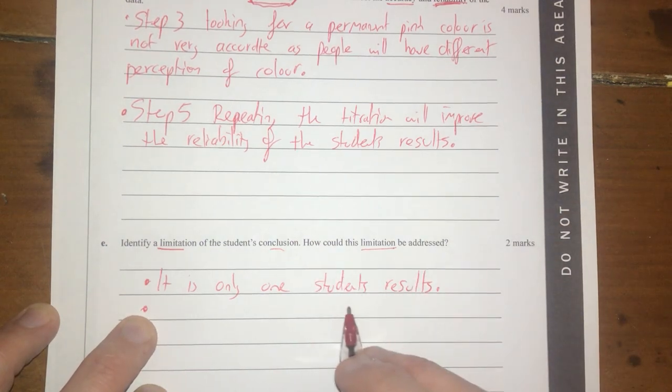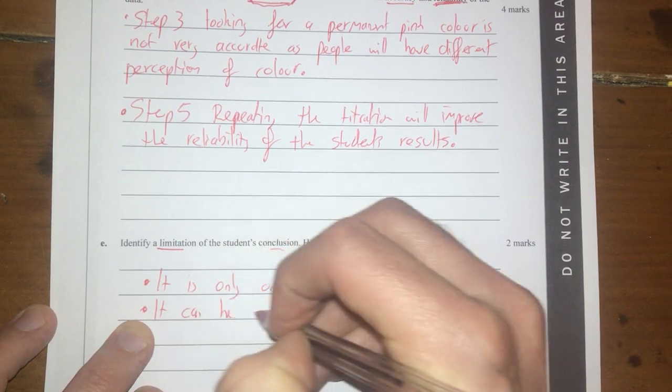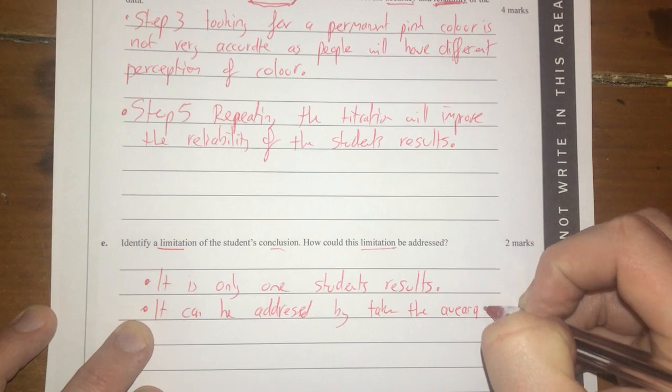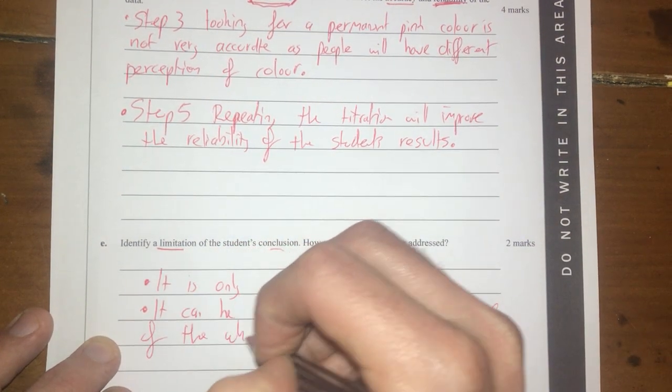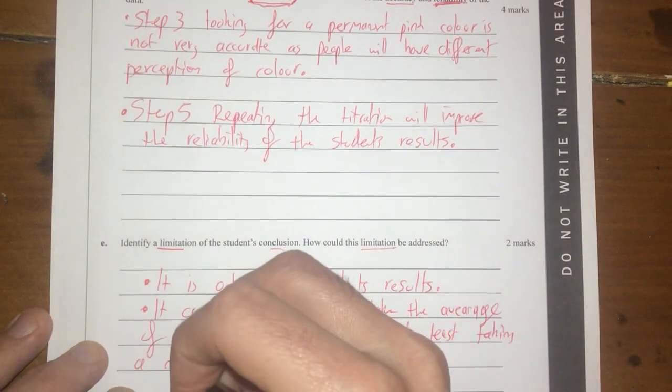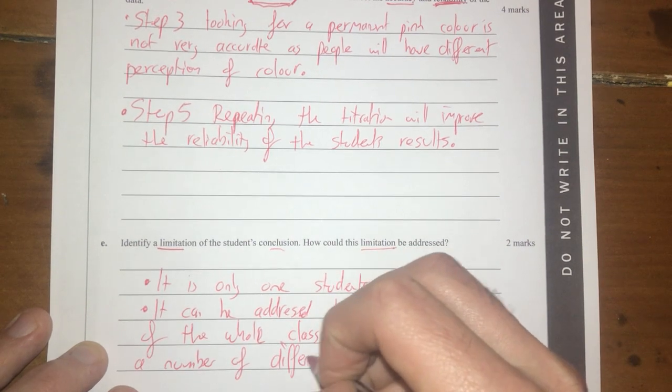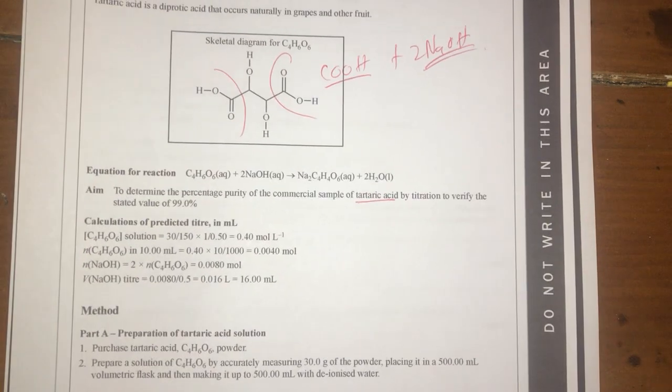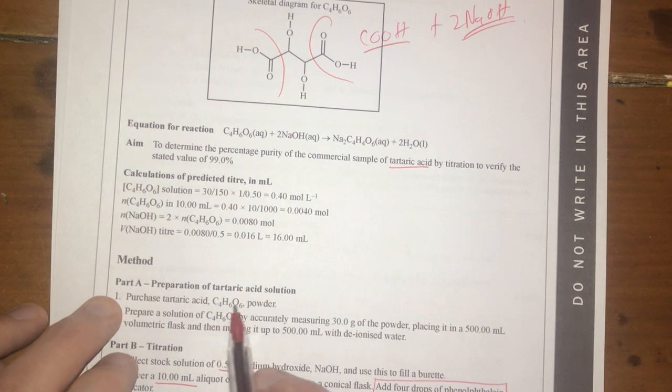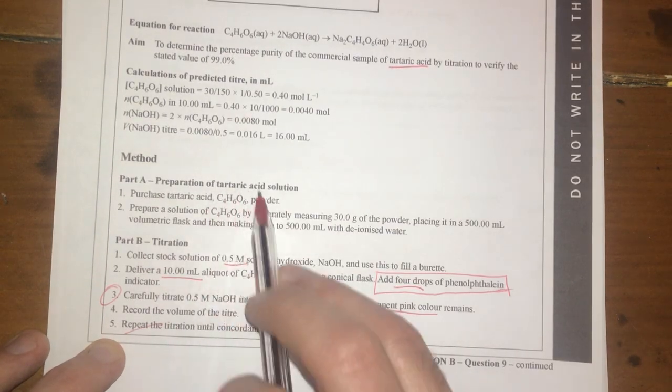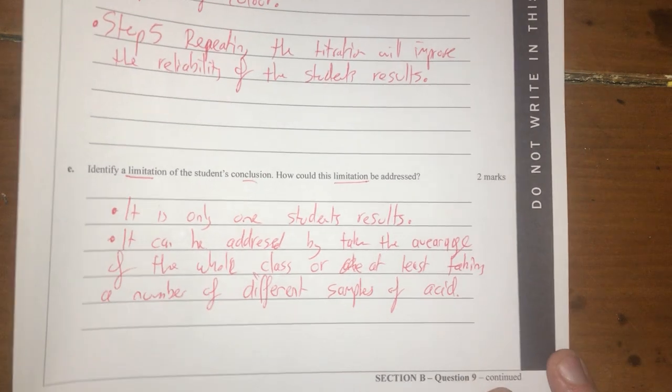I would suggest that this is one student's results and perhaps maybe they might need to do a bit more testing. So their limitation is the conclusion is the fact that it is only one student's results. And how can this be addressed? It can be addressed by taking the average of the whole class or at least taking a number of different samples of acid. All right. Because if you look at their method here, what they did is they made up an acid solution with just one sample of powder. So whilst they've repeated their titration here, they haven't repeatedly got different samples of powder. So therefore, it's not as, perhaps not as valid or it is limited. Their method's limited anyway.